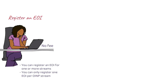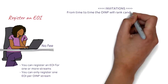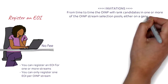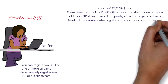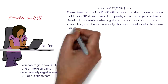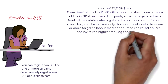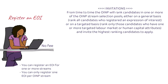Once you've registered for the EOI, you'll be awarded certain points based on Ontario's points table. As for the criteria for getting an invitation, what OINP states is that from time to time they will rank candidates in one or more stream selection pools — either on a general basis, ranking all candidates who registered an expression of interest, or on a targeted basis, ranking only those with specific targeted labor market or human capital attributes — and invite the highest-ranking candidates to apply.